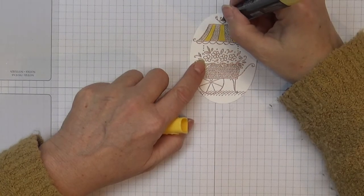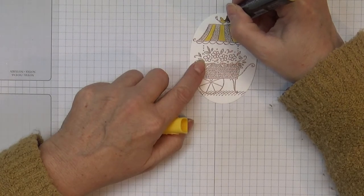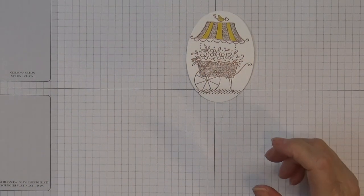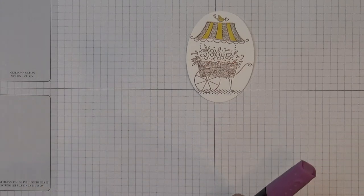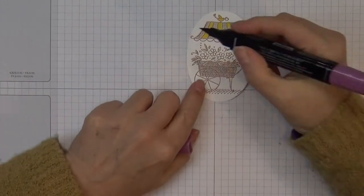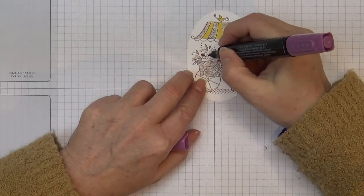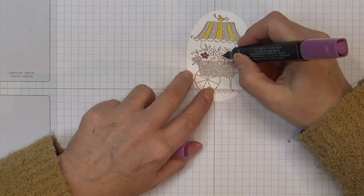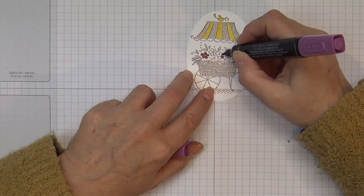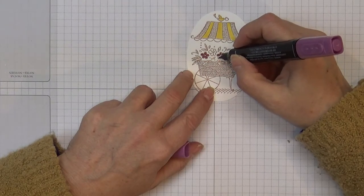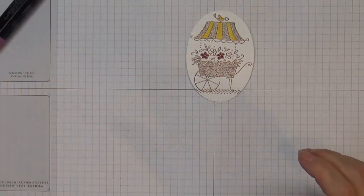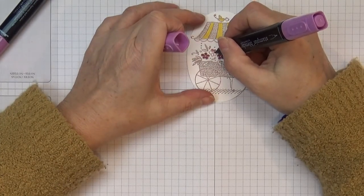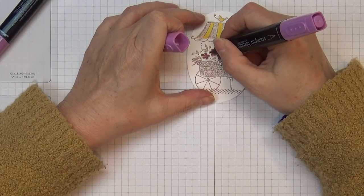So we'll do that. And I'm going to color my little bird yellow while I have the yellow out. Just get that little spot right there in his tail. Then I'm going to take the darker of the Rich Razzleberry and I'm going to color in the leaves. Or the petals, I guess, on this flower.